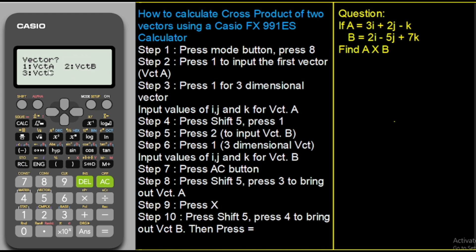Now your calculator is going to ask which vector you want to input first — is it vector A, vector B, or vector C? Number 1 stands for vector A, number 2 stands for vector B, and number 3 stands for vector C. Since we want to input vector A first — remember we need to input our vectors before calculating the cross product — we are going to press 1.